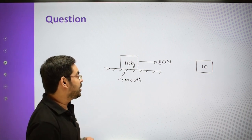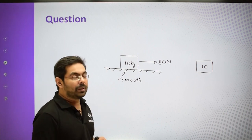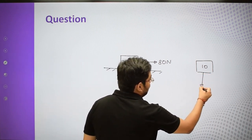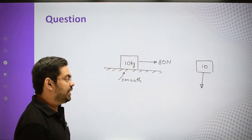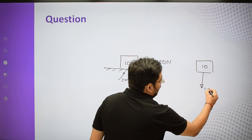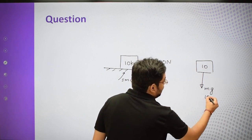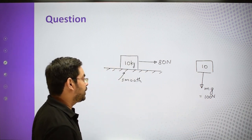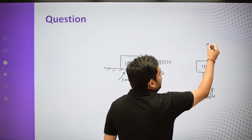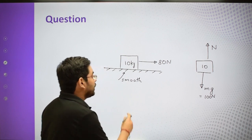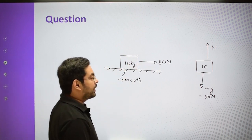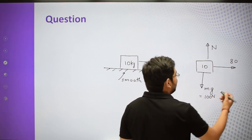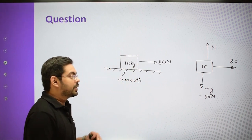This is the free body diagram. First we consider field forces — there is Mg downward. Mass is 10 and g is 10, so Mg = 100 Newton downward. In the upward (y) direction, there will be a normal force due to contact with the surface. And then we show the 80 Newton force in the horizontal direction. This is a very easy problem — I am just trying to explain how we write the equations.